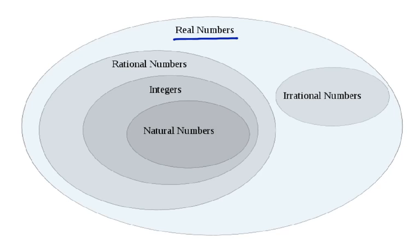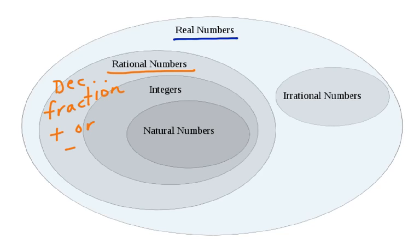Now, let's look at the next set here on the left — the set of rational numbers. A rational number can be a decimal, it can be a fraction, and it can be positive or negative. Decimals and fractions fall under rational numbers. Integers are also under the category of rational numbers. Notice that the integer bubble is inside rational numbers.